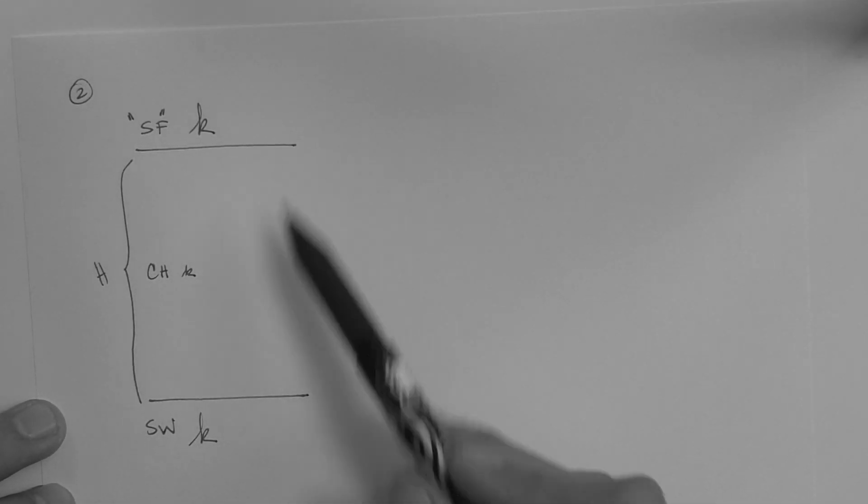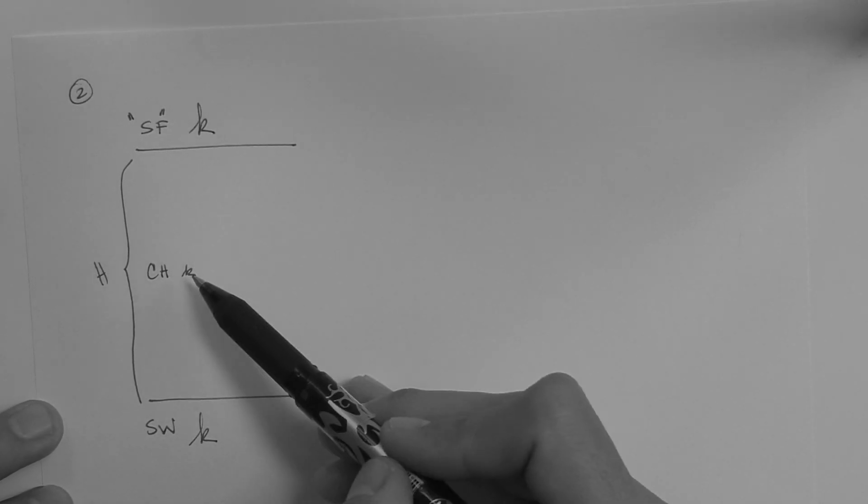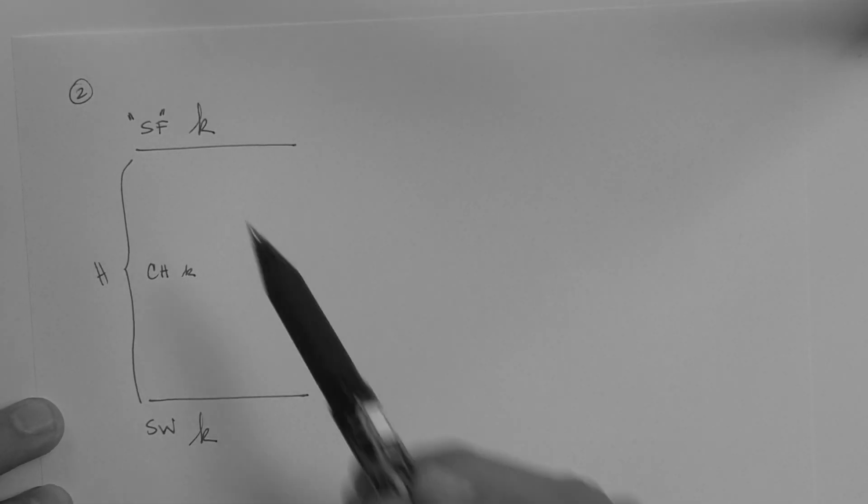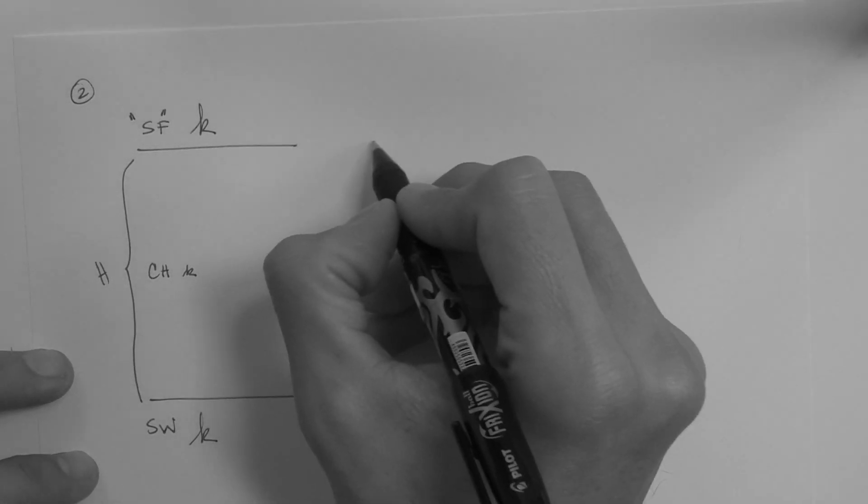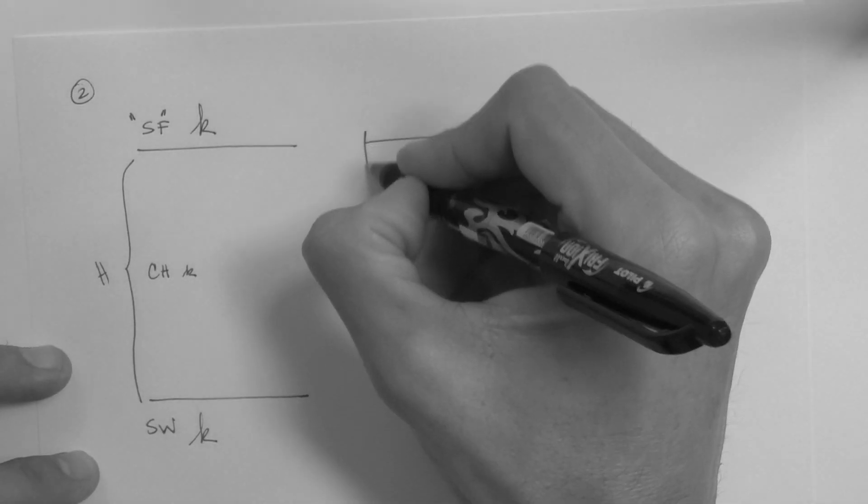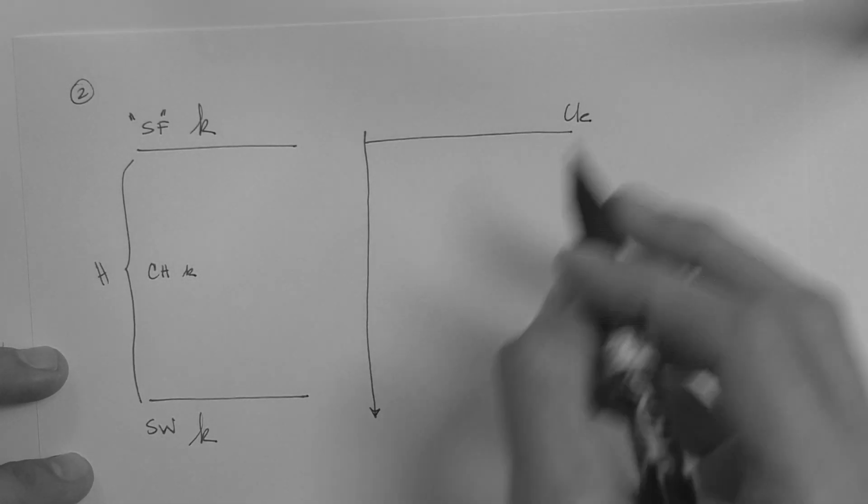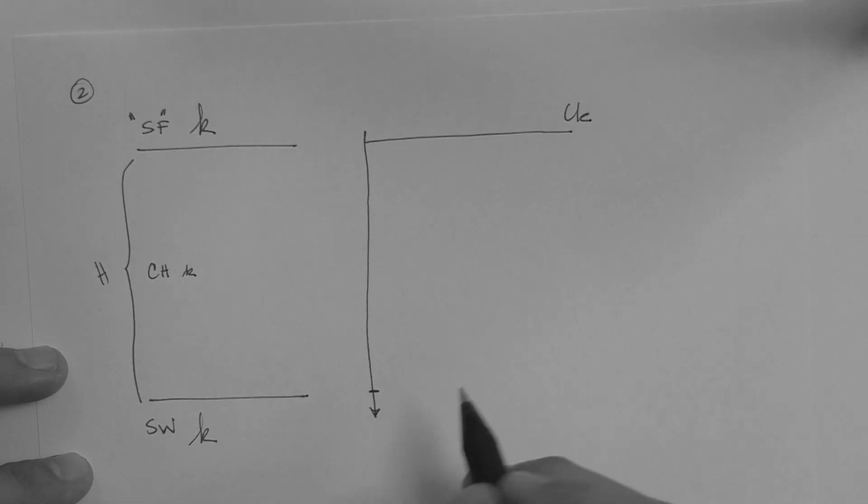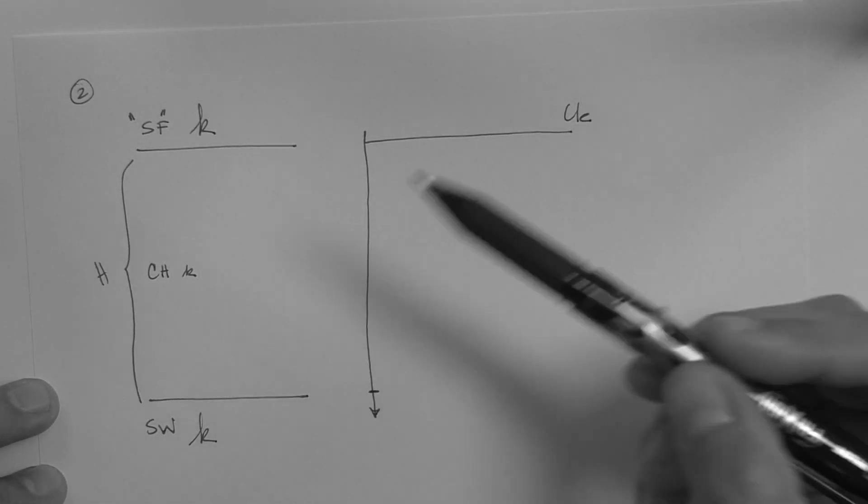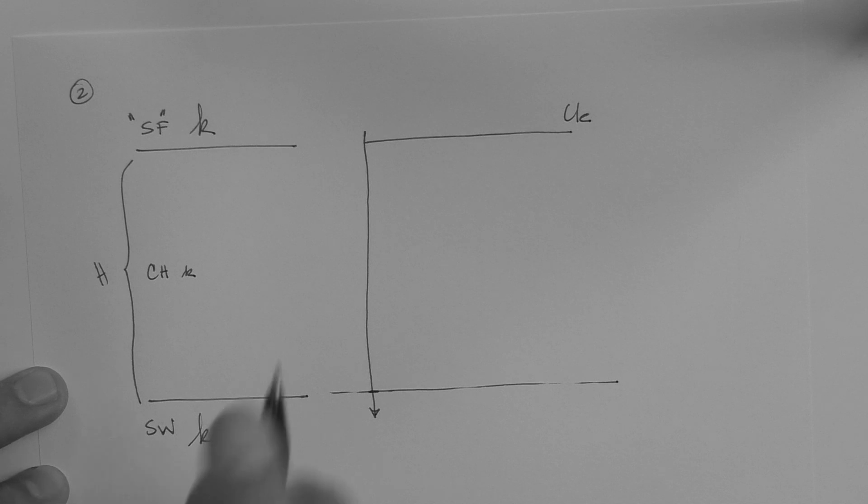The reason why they are drainage boundaries is because the hydraulic conductivity of the clay is lower than that of this material up here, drainage boundary, and also this material down here, drainage boundary. We are now going to plot the excess pore pressure versus depth along the depth of the clay layer.